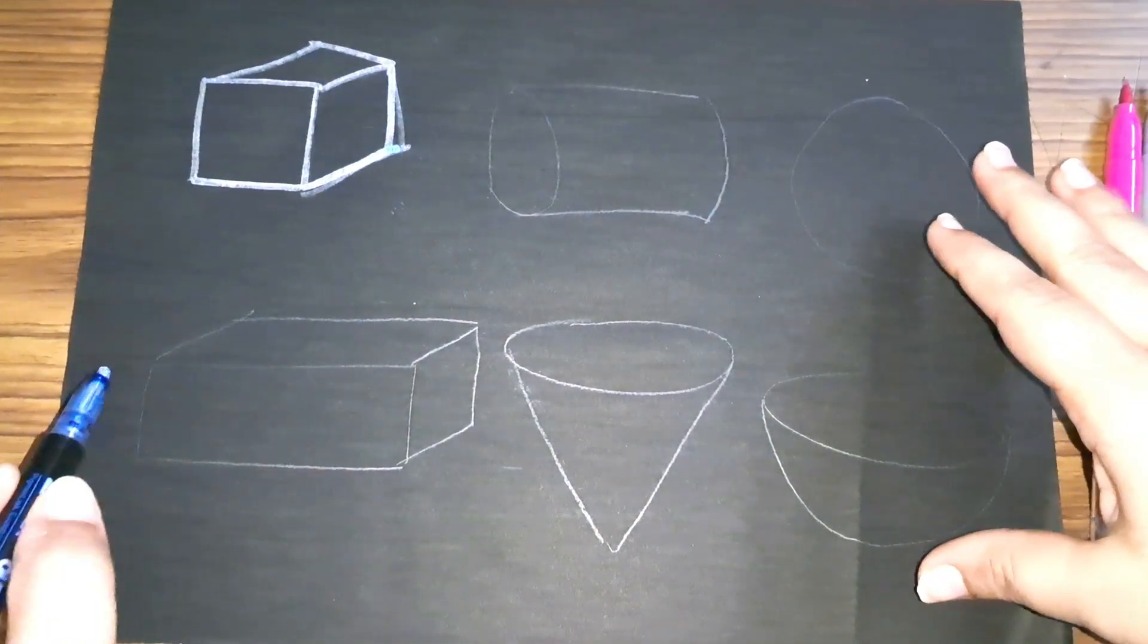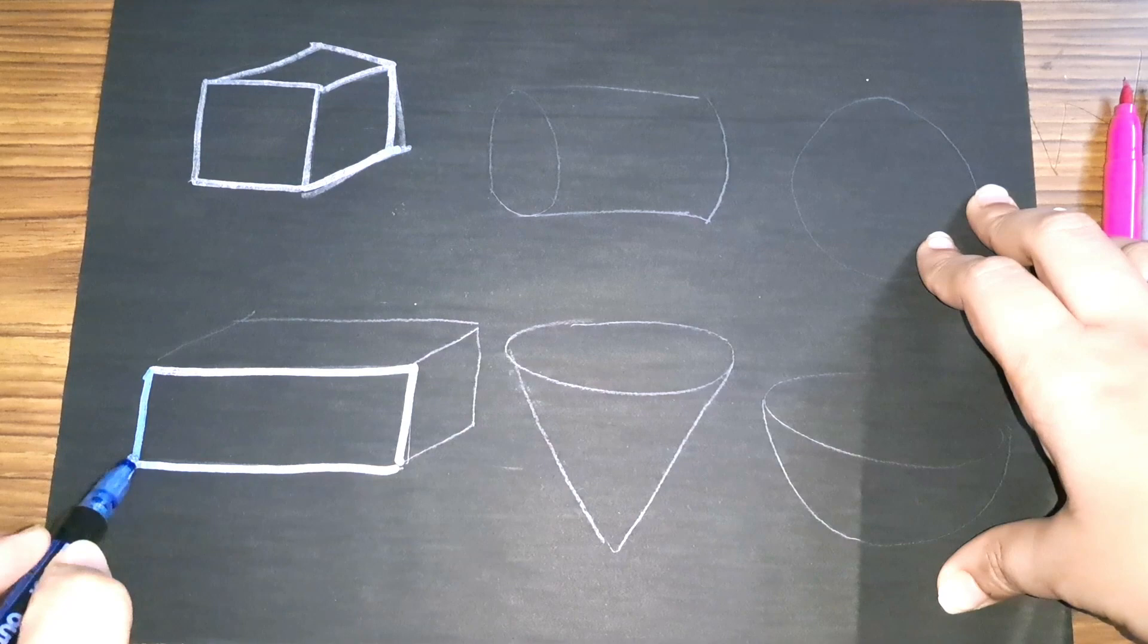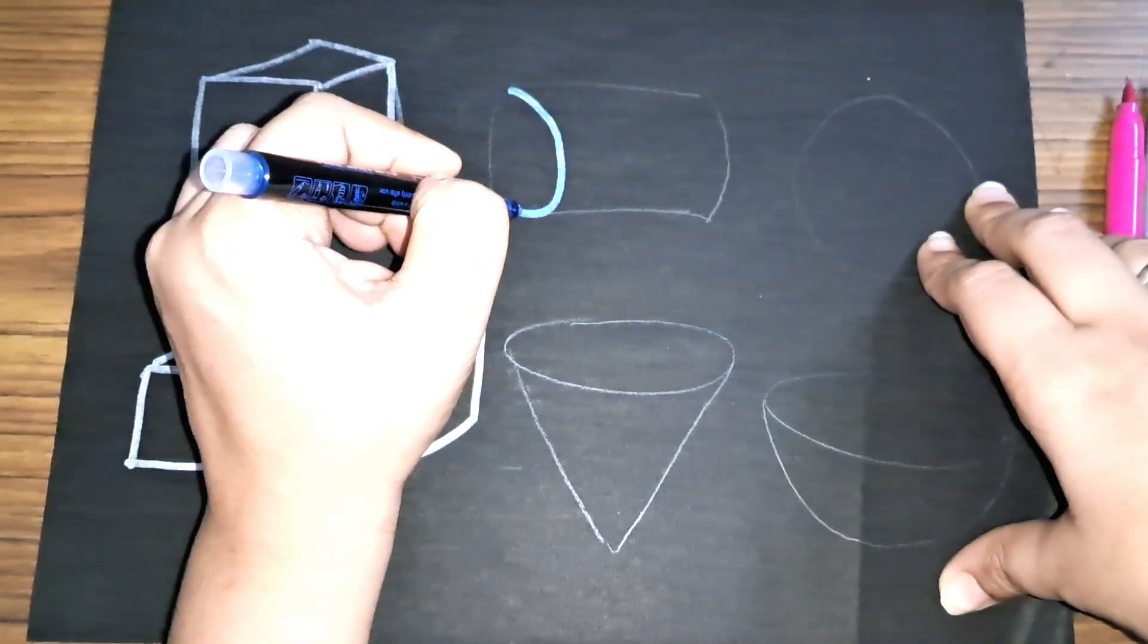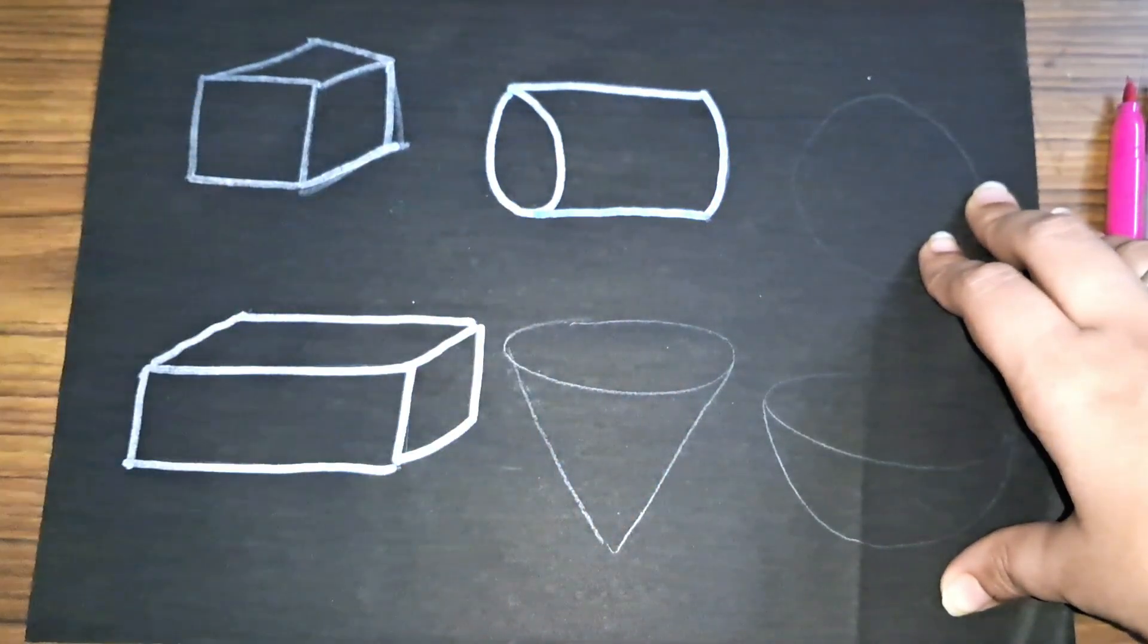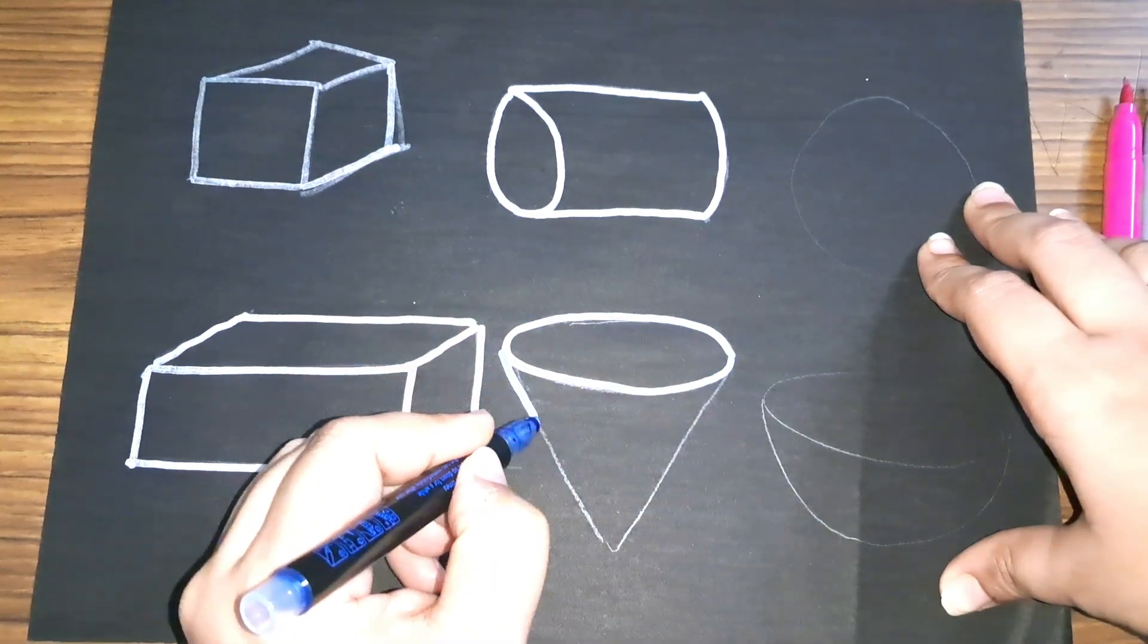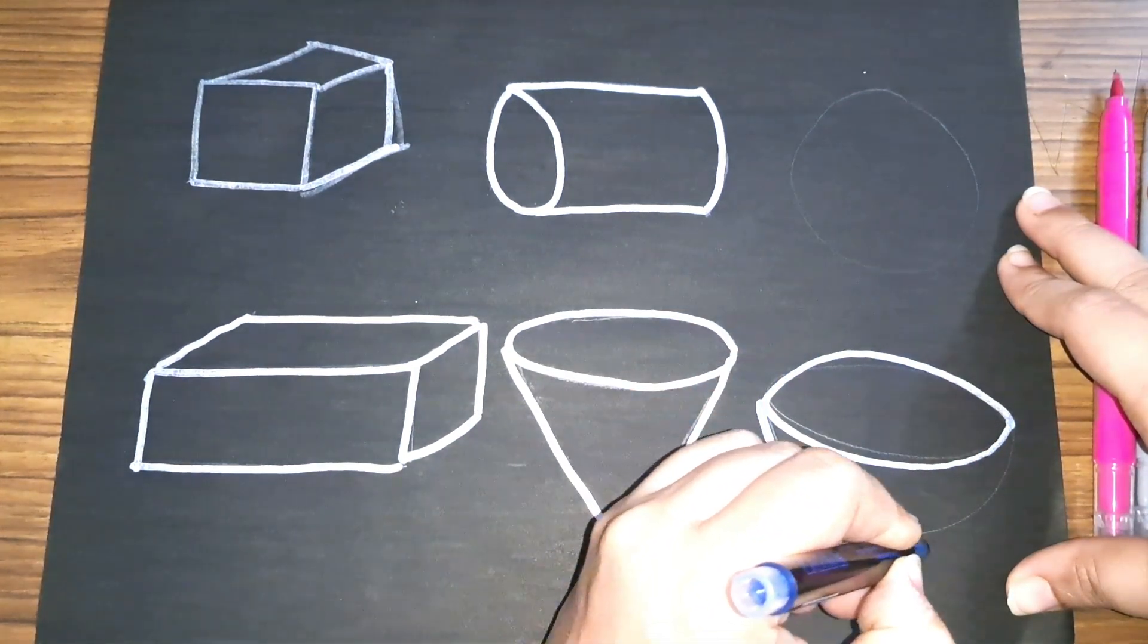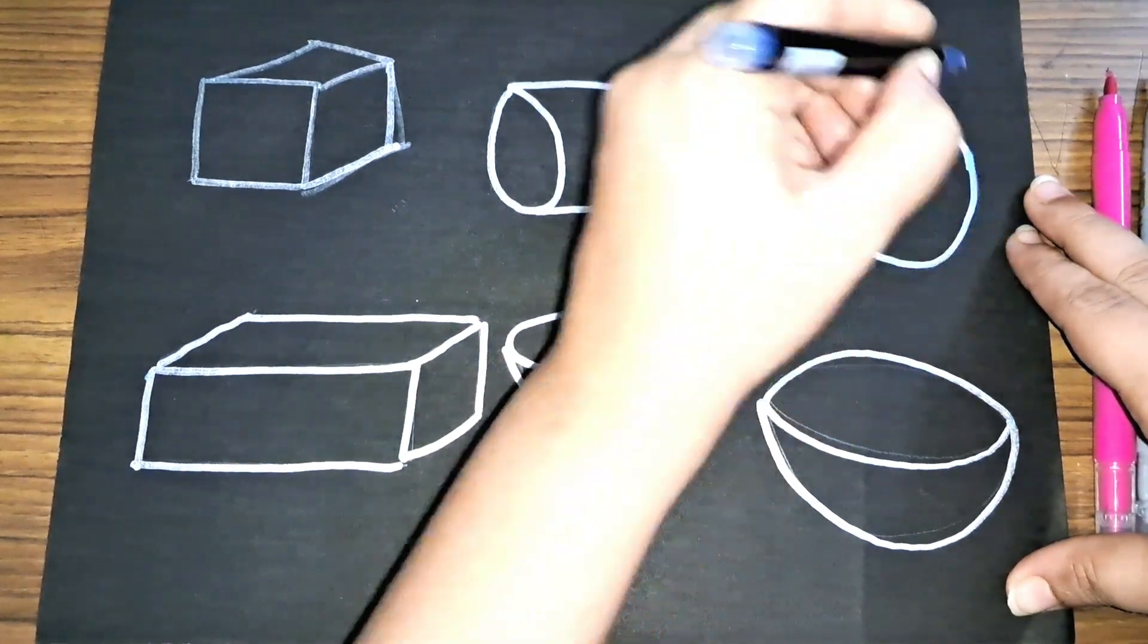Cube. Cuboid. Cylinder. Cone. Hemisphere. Sphere.